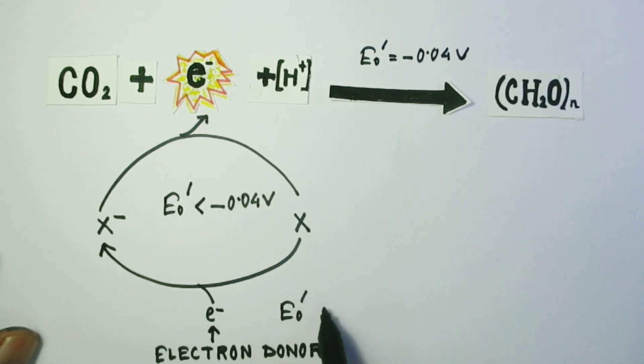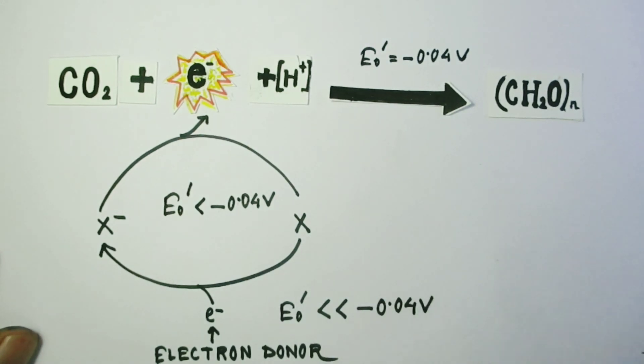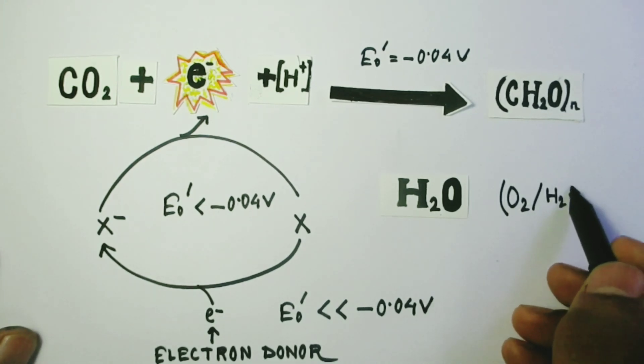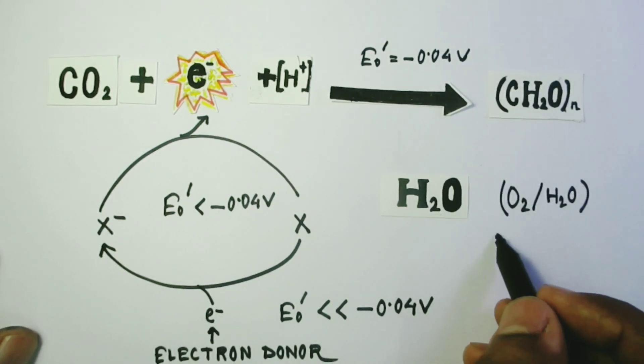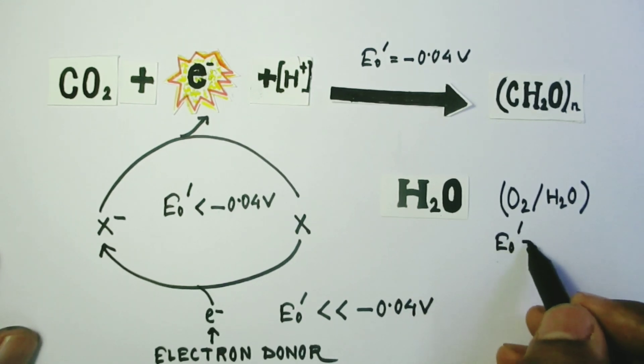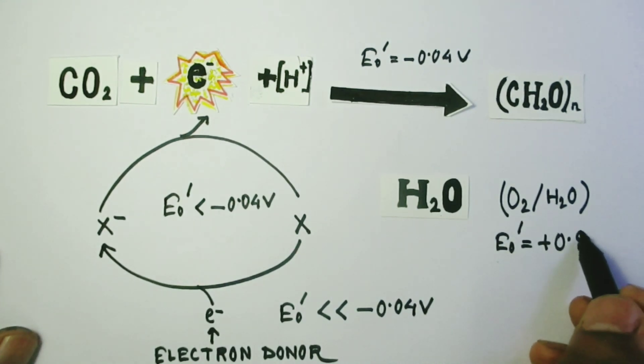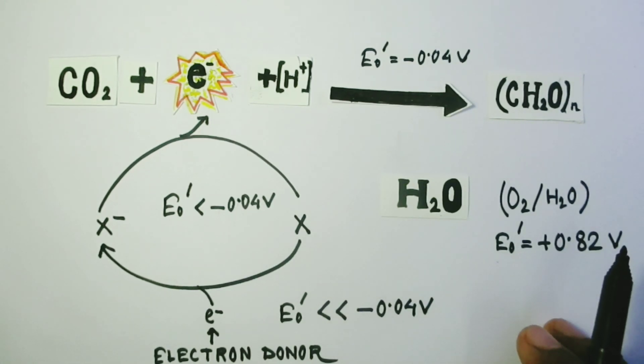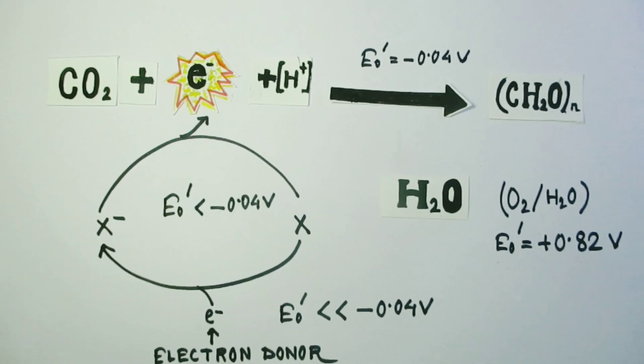But in case of H2O, this E0 prime value remains 0.82 volt in case of O2 H2O redox system. That is a problem because in this case, electrons have to be moved across the electrochemical gradient because the value is on the positive side.